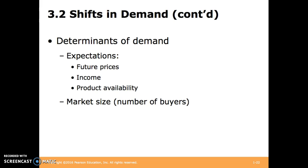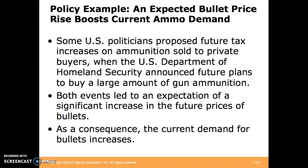Other determinants of demand include expectations — expectations of future prices, income, or product availability — and market size, the number of buyers. For example, when bullet prices were expected to rise, that caused an increase in current demand for bullets.